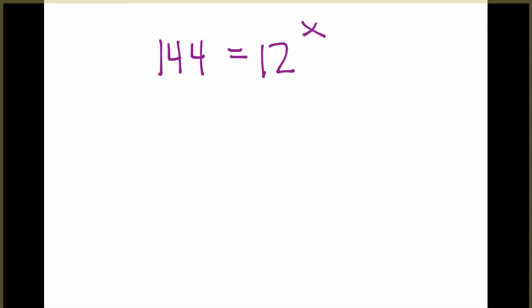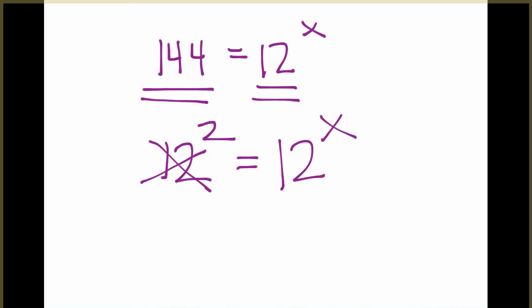With this method, our goal is to rewrite 144 as 12 to some power. 144 is 12 squared. What this says is, since the bases are the same, those bases can cancel out. Now, we can just set the exponents equal to each other. The solution is that x equals 2.